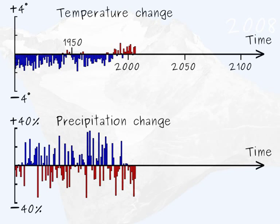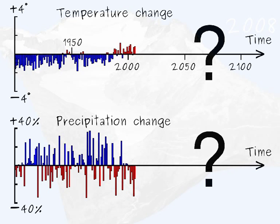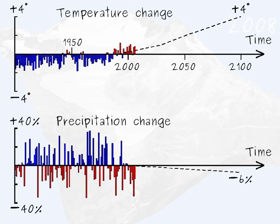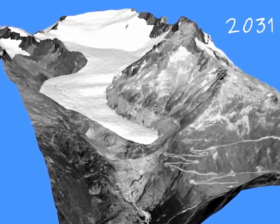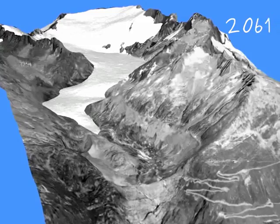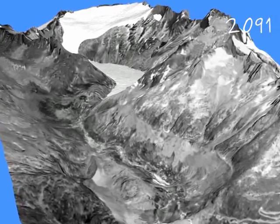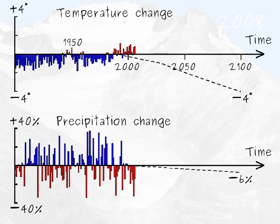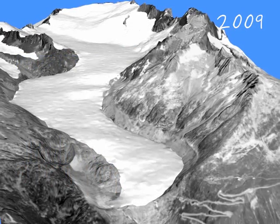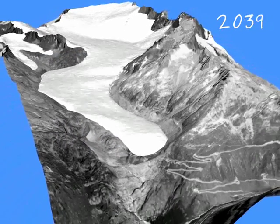Of course, no temperature or precipitation data are available for the future. Instead, we can consider different possible climatic scenarios. For example, a realistic increase in temperature would be around 4 degrees by 2100. According to this scenario, the glacier should vanish by the end of the century. But if we reverse the climatic trend by considering a new ice age, a totally different future occurs.